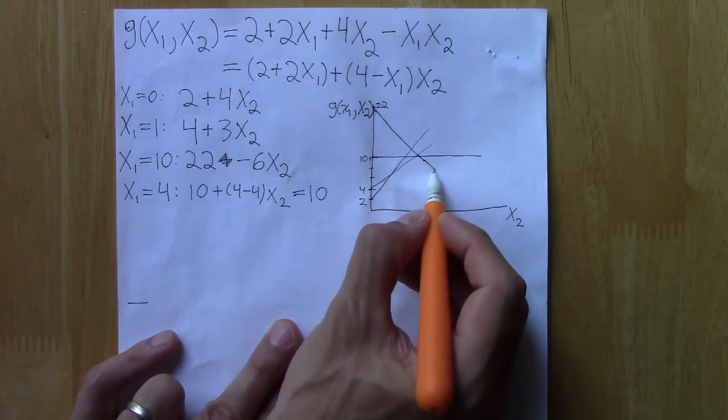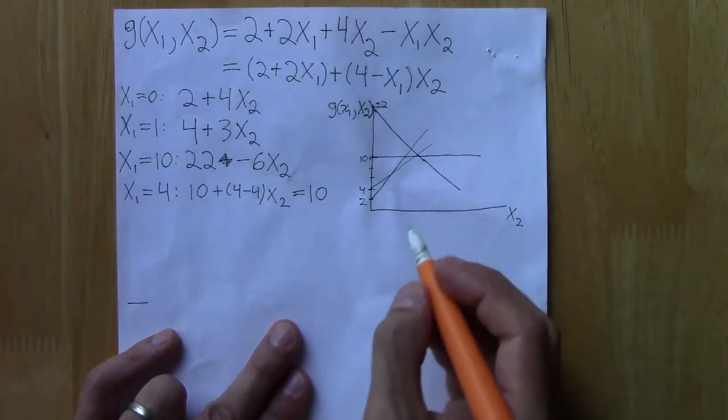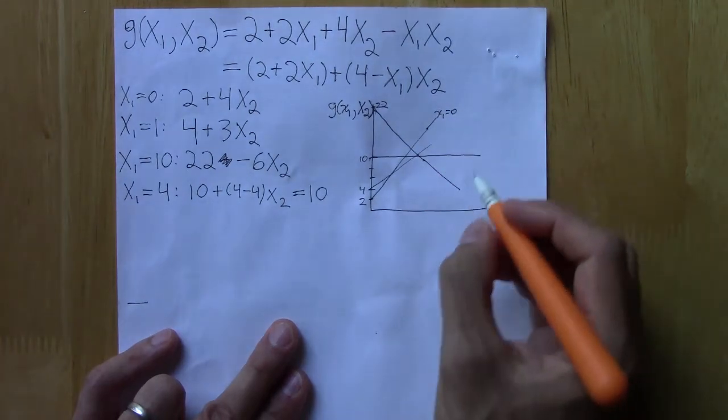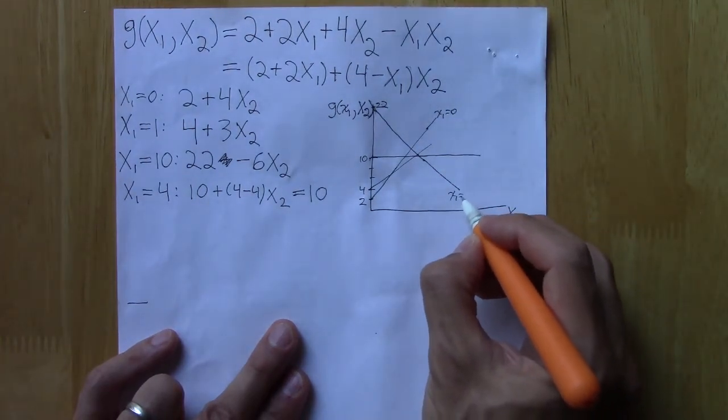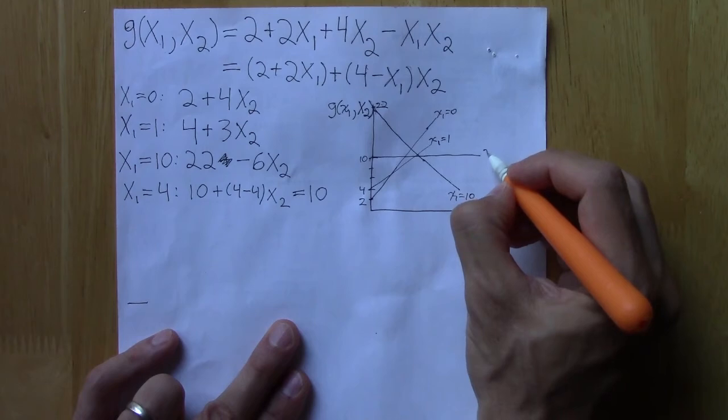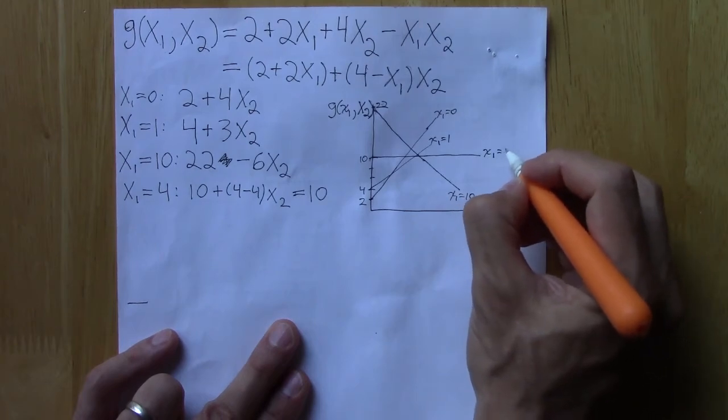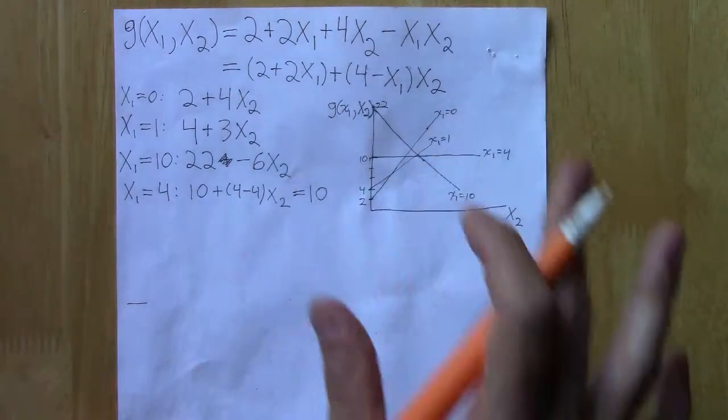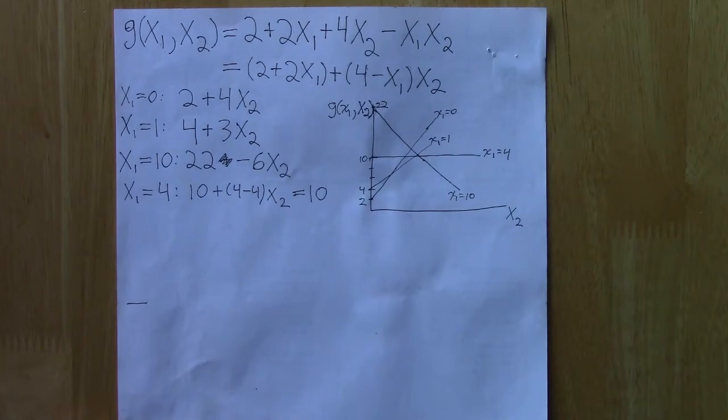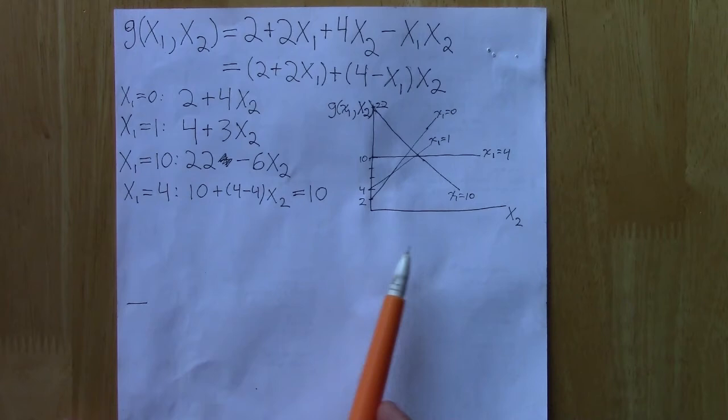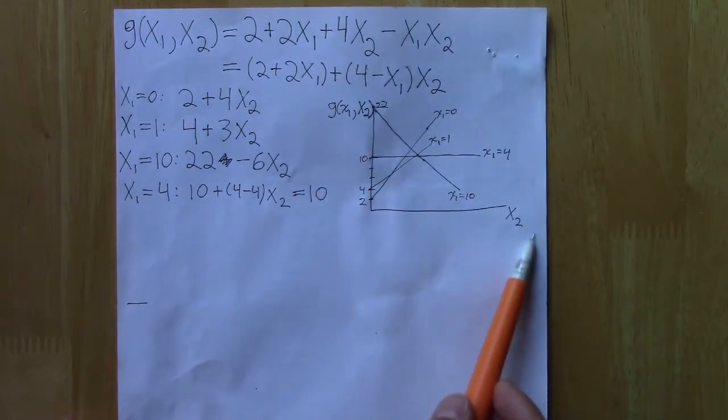So of course, you could use different colors or something. You could try to see the difference between these different lines to try to get a sense of the different relationship. You could do it the other way around too, where you pick fixed values of x₂, and then you graph the function with respect to x₁, given fixed values of x₂.